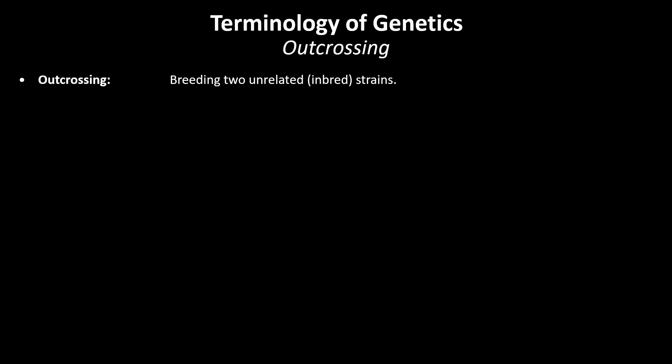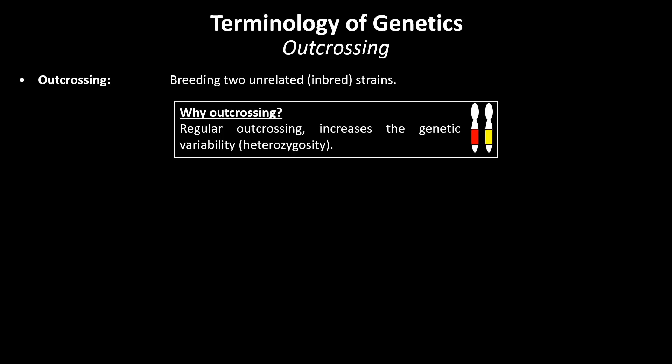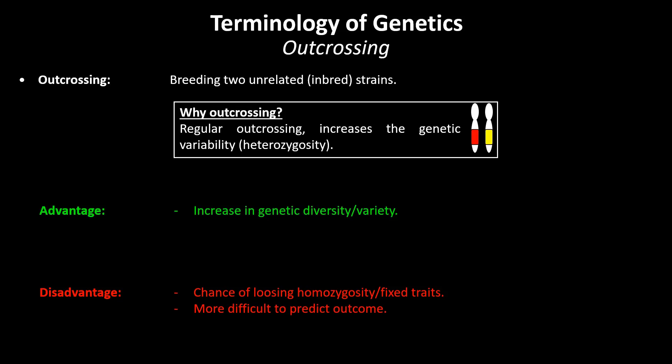Outcrossing refers to breeding two unrelated strains together. Although this often is the start of many new breeding experiments, it can also be applied further down the line. Regular outcrossing will increase the genetic variability or the heterozygosity within a line. This increase in genetic variability can be a big advantage in order to improve certain traits. Disadvantages of outcrossing are the chance of losing fixed traits, more difficulty to predict the outcome, and the risk of introducing unwanted traits into a line.